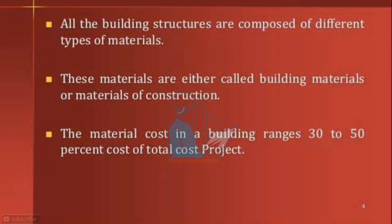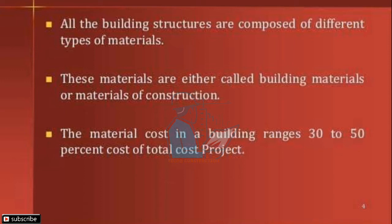Buildings are composed of different types of materials like bricks, steel, and many other things. These materials are either called building materials or materials of construction. The material cost in a building ranges from 30 to 50 percent of the total cost of the project.